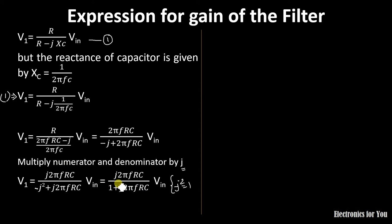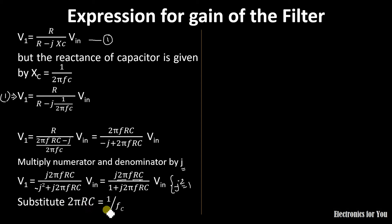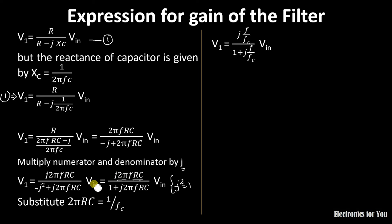Further, we substitute 2πRC = 1/FC, because the cutoff frequency FC is given by FC = 1/(2πRC), and therefore 2πRC = 1/FC. Putting this value in, we get V1 expressed in terms of FC. Let this be equation number 2.